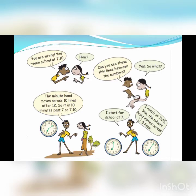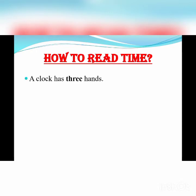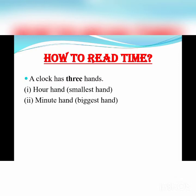My dear students, don't be confused. Let's learn how to read time. As you know, a clock has 3 hands: the hour hand, that is the smallest one; then the minute hand, that is the biggest one; and the second hand, that is the fastest one. First, we have to observe the hour hand, and then we will see the minute hand. If the hour hand lies in between 11 and 12, then we will count as 11 hours. If the hour hand lies in between 9 and 10, then we will count as 9 hours, not 10 hours. Be careful.